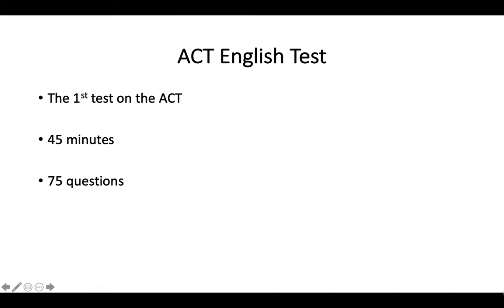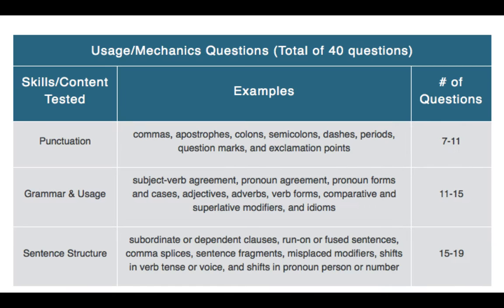The ACT English test is the first test on the ACT. You'll have 45 minutes to answer 75 questions. Out of those 75, 7 to 11 of them will be punctuation questions, testing if you know how to use commas, apostrophes, colons, semicolons, dashes, etc.